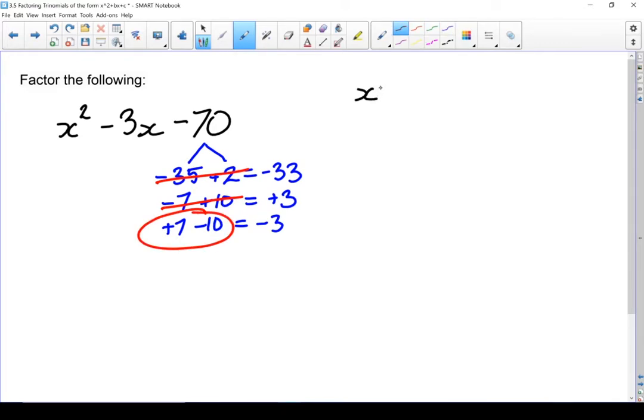I'm going to rewrite it. x squared doesn't change. However, that minus 3x is going to become a plus 7x minus 10x. And that minus 70 doesn't change. If you look at it, if I put the positive 7x and the minus 10x together, I end up with that minus 3x. So I haven't really changed the expression. I just worked it so it looks a little different.